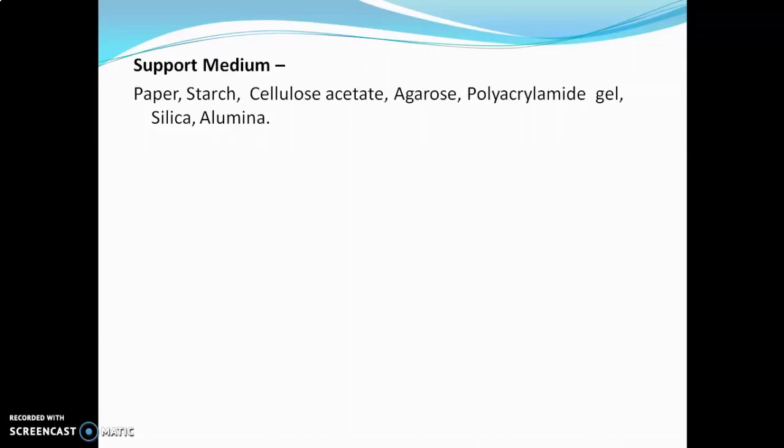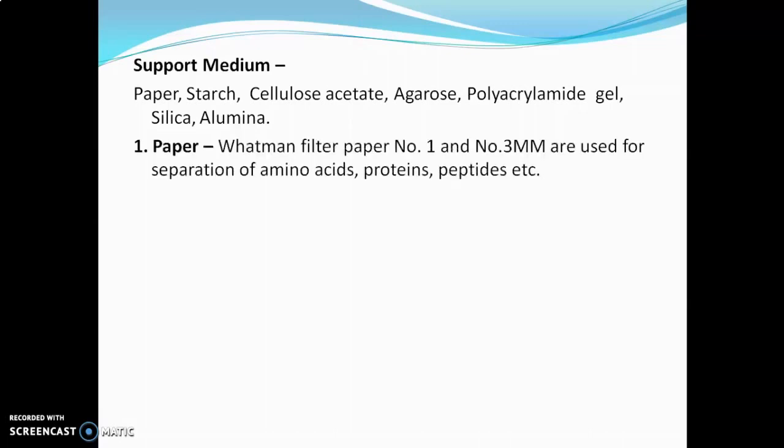Now we will look at each support medium in detail. First is paper, used in paper electrophoresis. Whatman filter paper number 1 and number 3 MM are used for separation of amino acids, proteins, peptides, etc. The drawback of using paper is that it shows adsorption of the sample on it, and only a small amount of sample should be used.